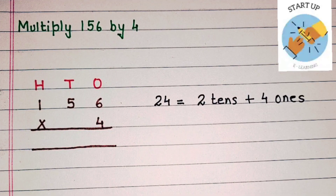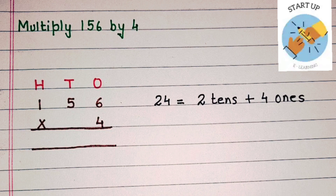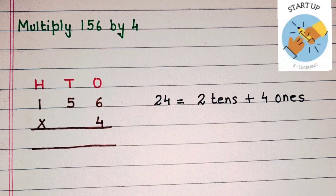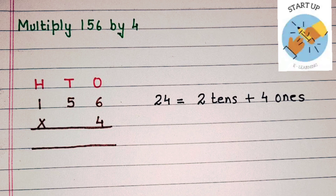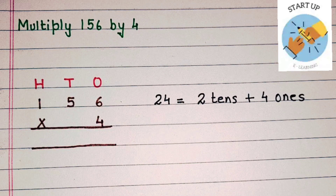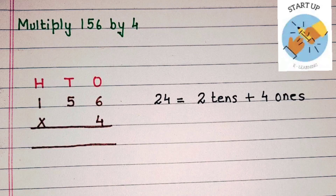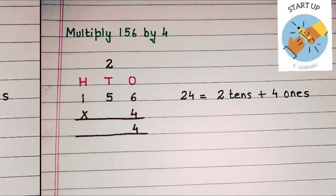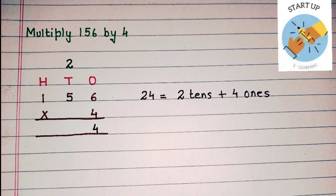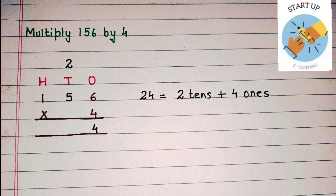We always start multiplication from the 1's place. So let's multiply 4 by 6. 4 sixes are 24. 24 has 2 tens and 4 ones. So now we are going to write 4 under the 1's place, and the digit at the 10's place will be carried over to the 10's place.